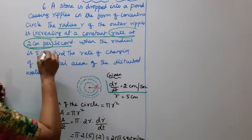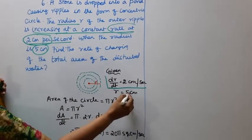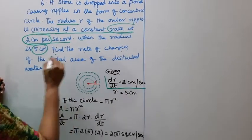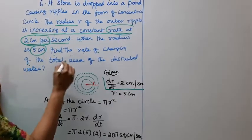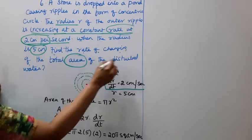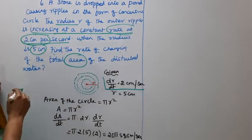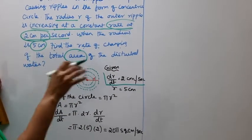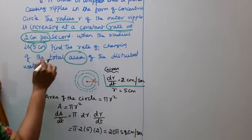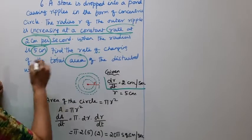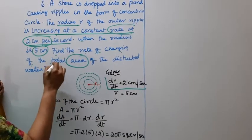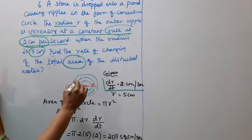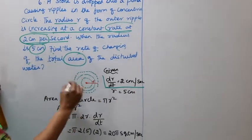When the radius is 5 cm, find the rate of change of the total area of the disturbed water. When the stone is dropped into the pond, the water is disturbed — find the rate of change of the total area of the disturbed water, which forms concentric circles.